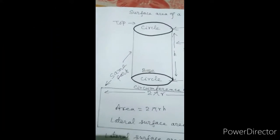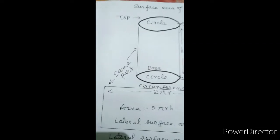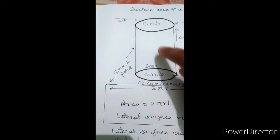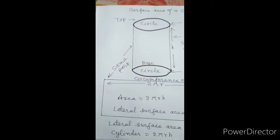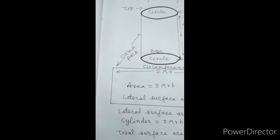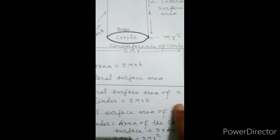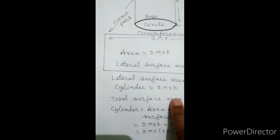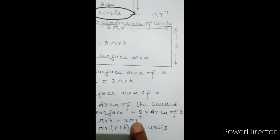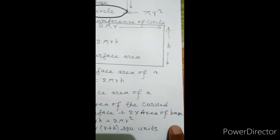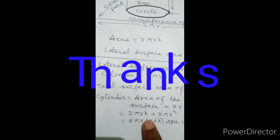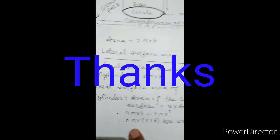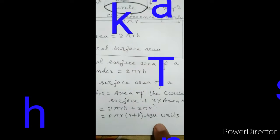In this way, the total surface area of a cylinder will be the sum of the curved surface area, the top circle area, and the base circle area. All these 3 areas are added to get the area of the whole cylinder. Lateral surface area of a cylinder is equal to 2πrh. Total surface area of a cylinder is equal to 2πrh plus 2πr², which equals 2πr into (r plus h) square units.